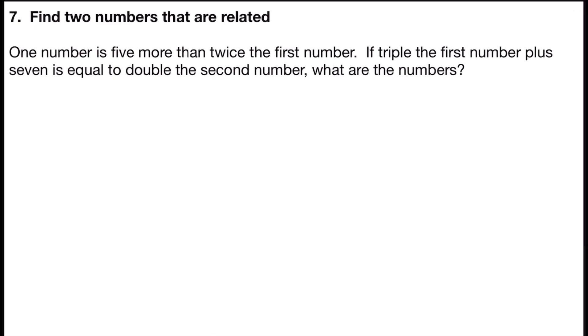So again, we're going to use translation twice. First, to write an expression for the variables or unknowns we're looking for, and secondly, to write the equation so that we can solve it.